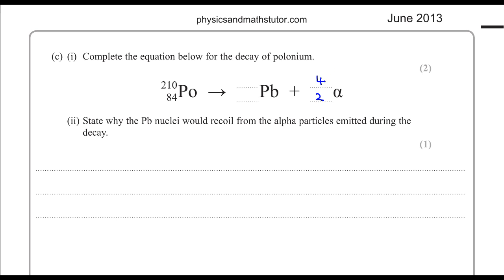So giving a total mass of 4. Then we can write down what lead has using the fact that 2 plus the number for the lead should give you 84. So that's 82. And then the mass would be 206.